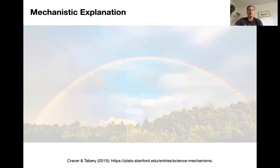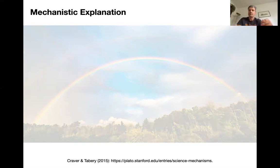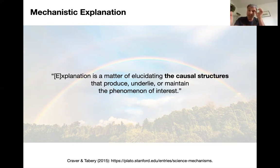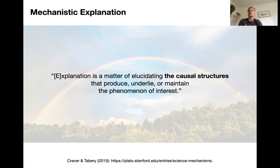I really recommend a wonderful article by Craver and Tabery on the Stanford Encyclopedia of Philosophy. Craver and Tabery say: explanation in this mechanistic account is a matter of elucidating the causal structures that produce and rely on or maintain the phenomenon of interest. That's also what Galileo did with the pendulum — without any general law of gravity, he just looked at the forces that act on a bob.